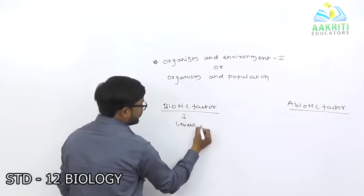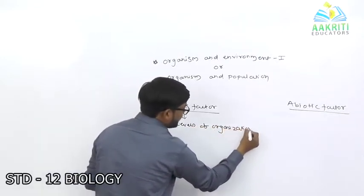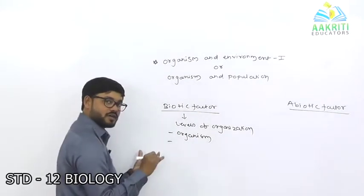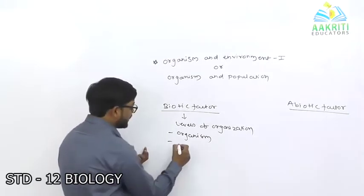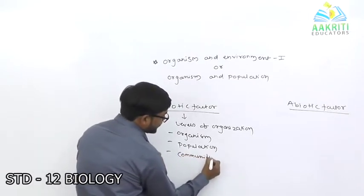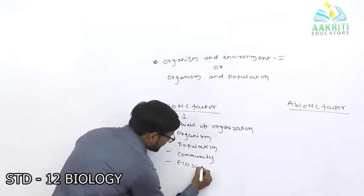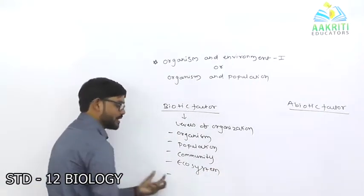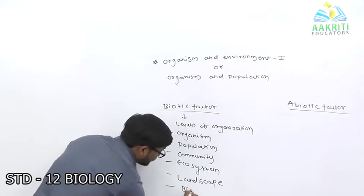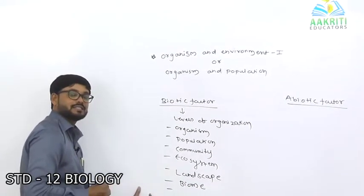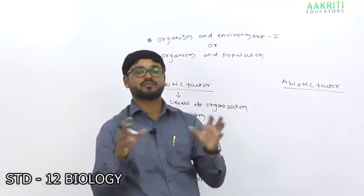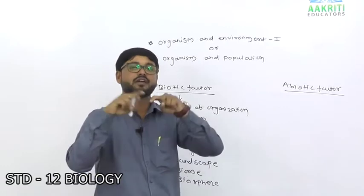Levels of organization — that is very important. Starting with the organism: how it develops. Then particularly populations, then community, then ecosystem — what is exactly an ecosystem. Then landscape, biome (very important), and biosphere. The lithosphere, hydrosphere, and atmosphere — all together, along with biomes, is called the biosphere.